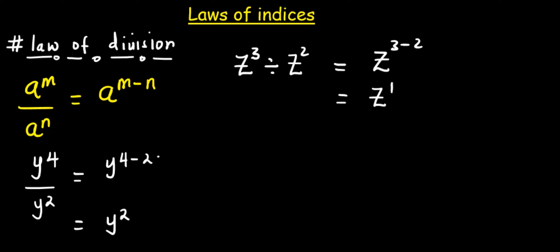Example 3. Simplify x raised to power 4 multiplied with y raised to power 2 divided by 2x raised to power 2, then y raised to power 1.